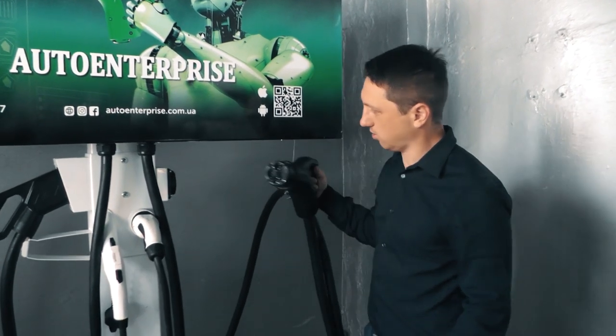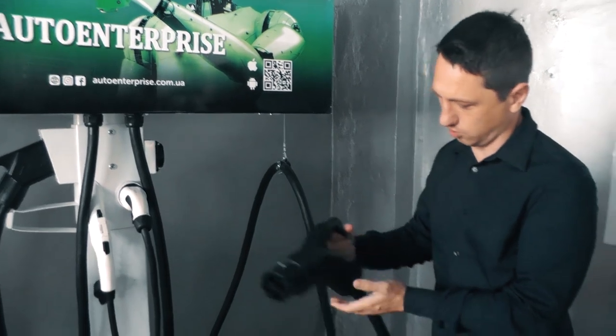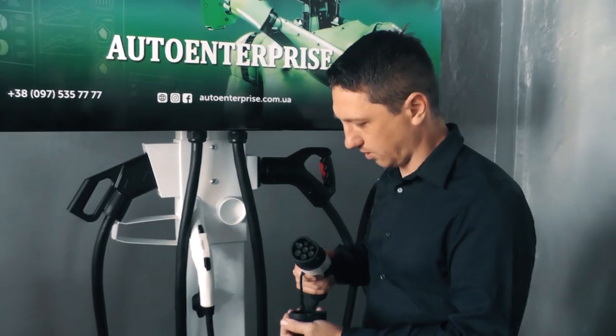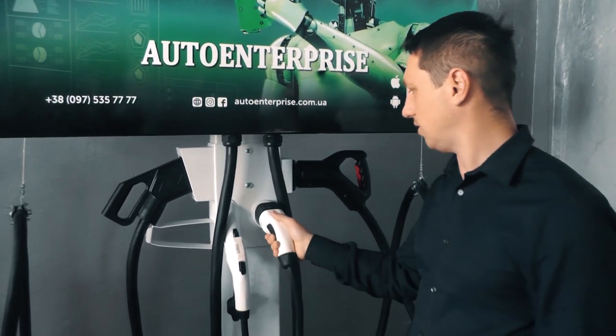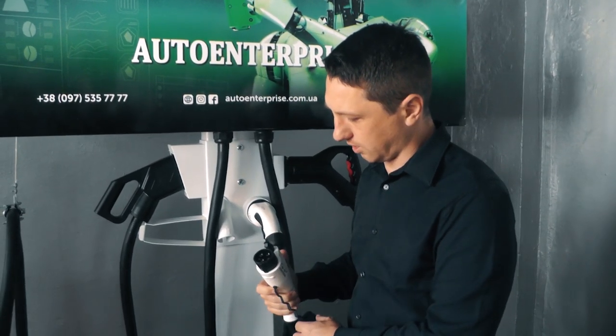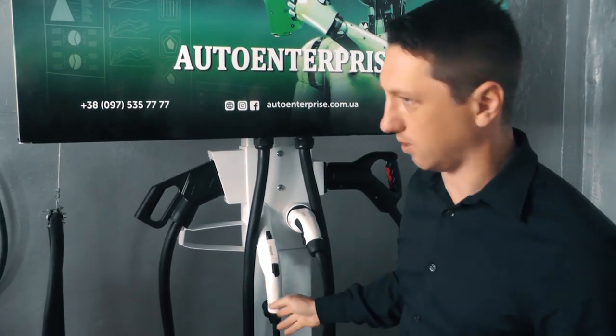It has a Chademo plug and a unique variation of a Chademo handle. As for the AC connectors, the Type 2 connector allows charging up to 44 kW at 63 amps. The Type 1 connector allows charging up to 80 amps, 18 kW. It's mainly for Tesla.